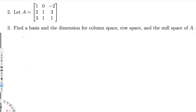Let's do the Gauss-Jordan elimination. Copying this matrix, we have: 1, 0, -2 / 2, 1, 3 / 3, 1, 1. We want to bring it to the reduced row echelon form pattern: 1, 0, 0 / 0, 1, 0 / 0, 0, 1. To do that, we need to make certain entries equal to zero.